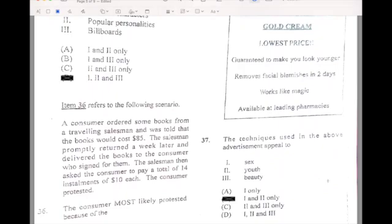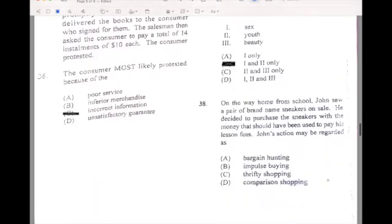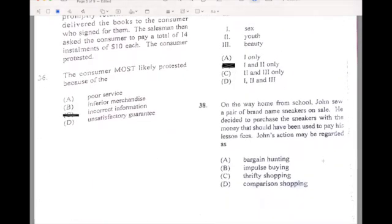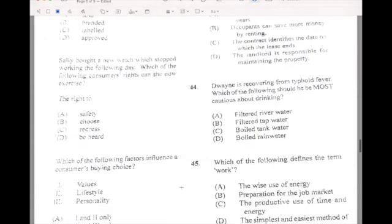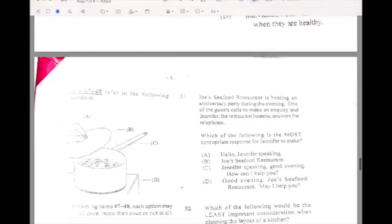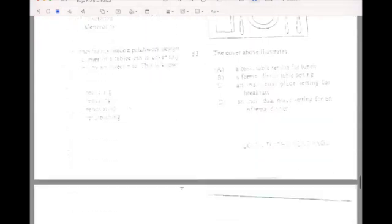I think we're going to close here because I'm unable to see. Thirty-eight, we are able to see this one. On the way home from school, John saw a pair of brand new sneakers for sale. He decided to purchase the sneakers with the money that should have been used to pay his lesson fee. John's action may be regarded as impulse buying. I am really sorry, but I'm not able to see the rest of the paper properly.